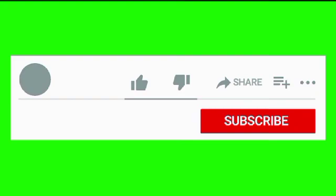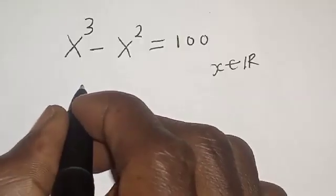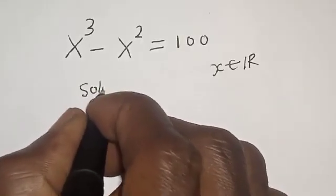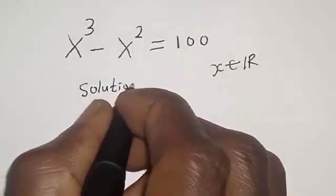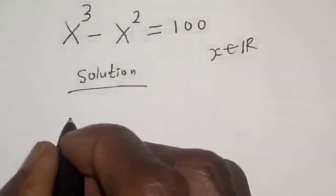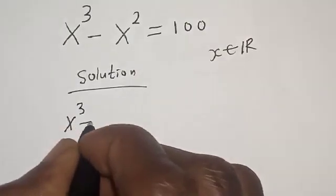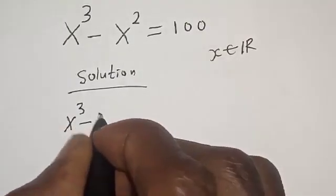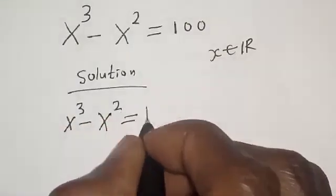But before we proceed, please don't forget to like, share, comment, and subscribe. Solution. We have the given equation: x raised to power 3 minus x squared is equal to 100.